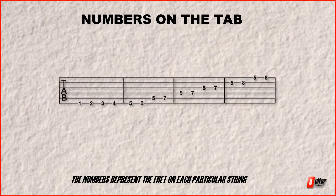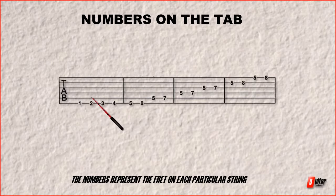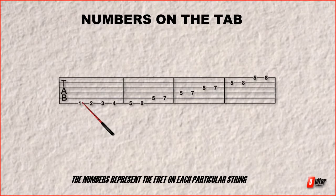Now these numbers, which again represent your frets, are specifically placed on a particular line. Now that's just telling you that they want, for example, the first string or the first fret on your low E string.